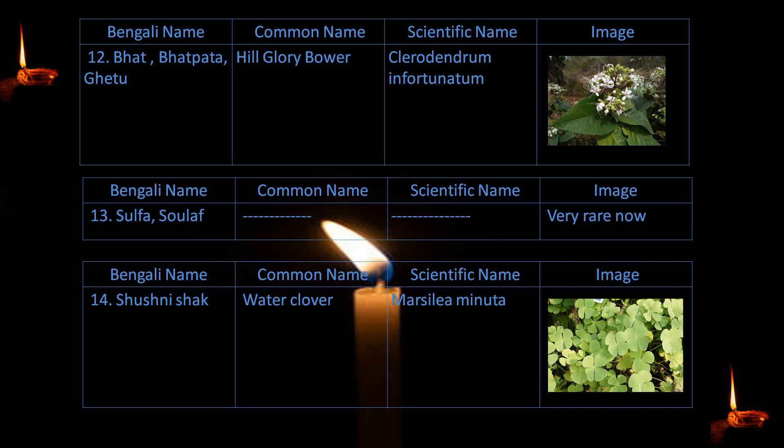13. Sulpha or Sholof — a very rare plant. 14. Shushni shag — water clover — Marsilea minuta.